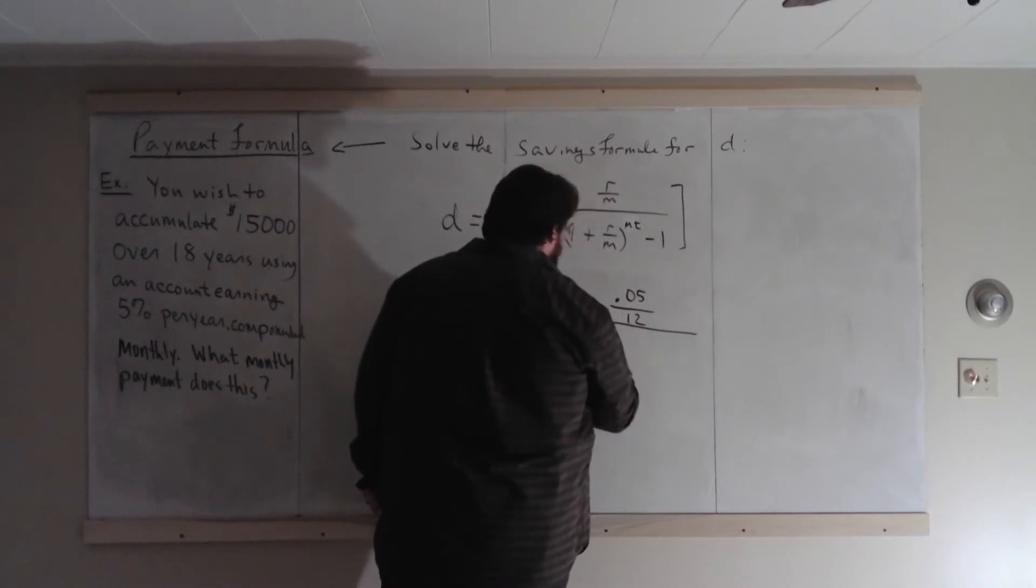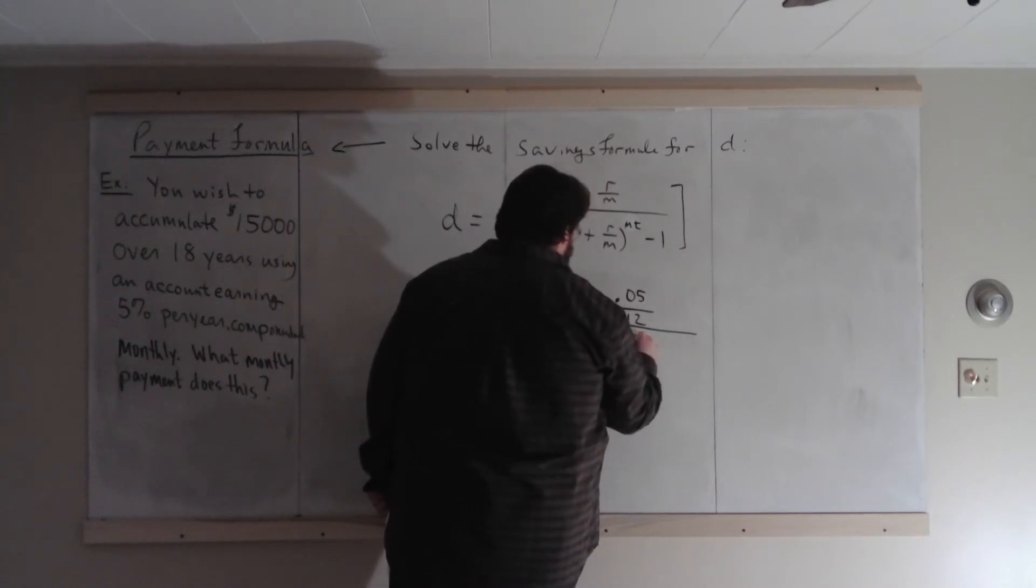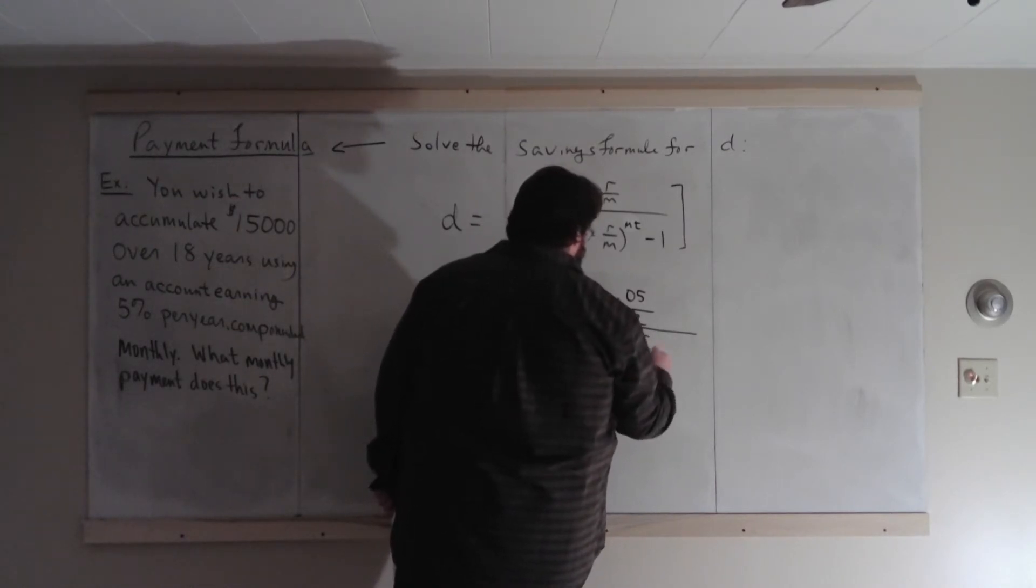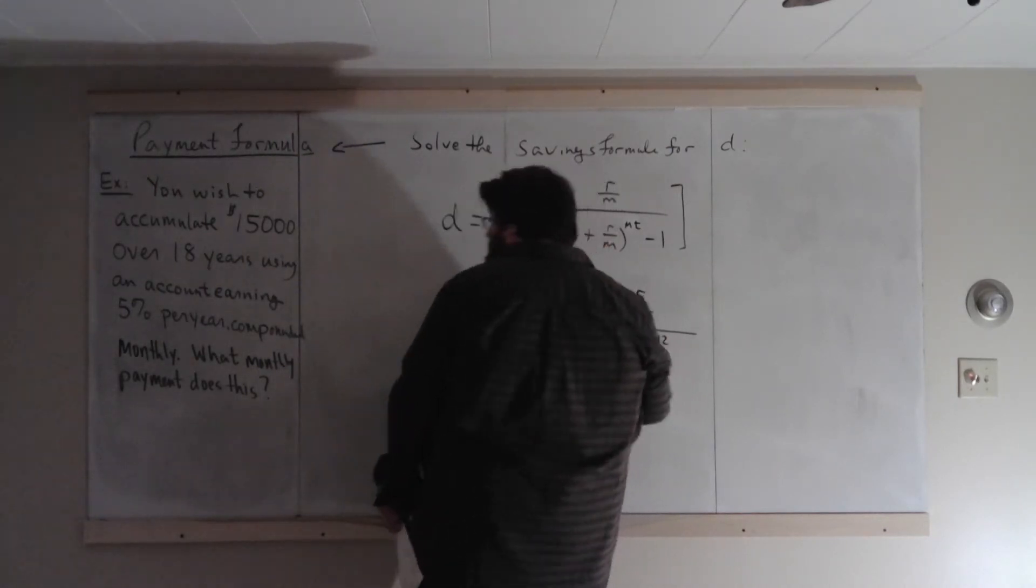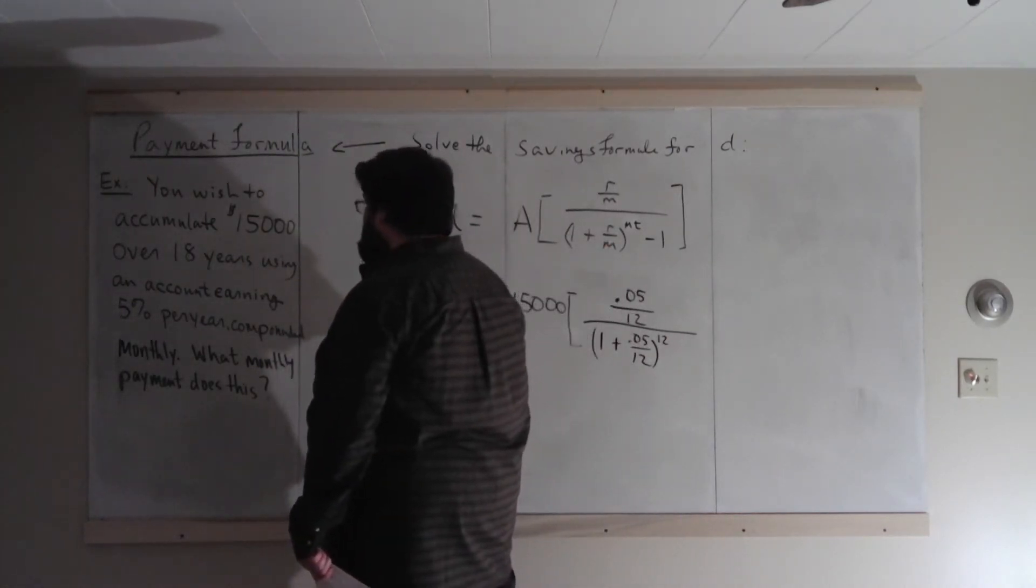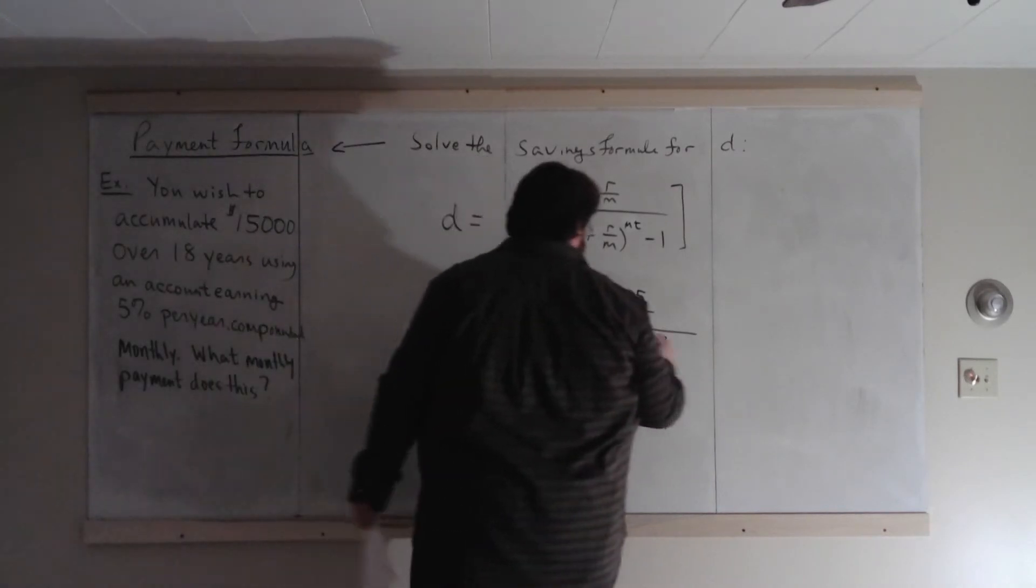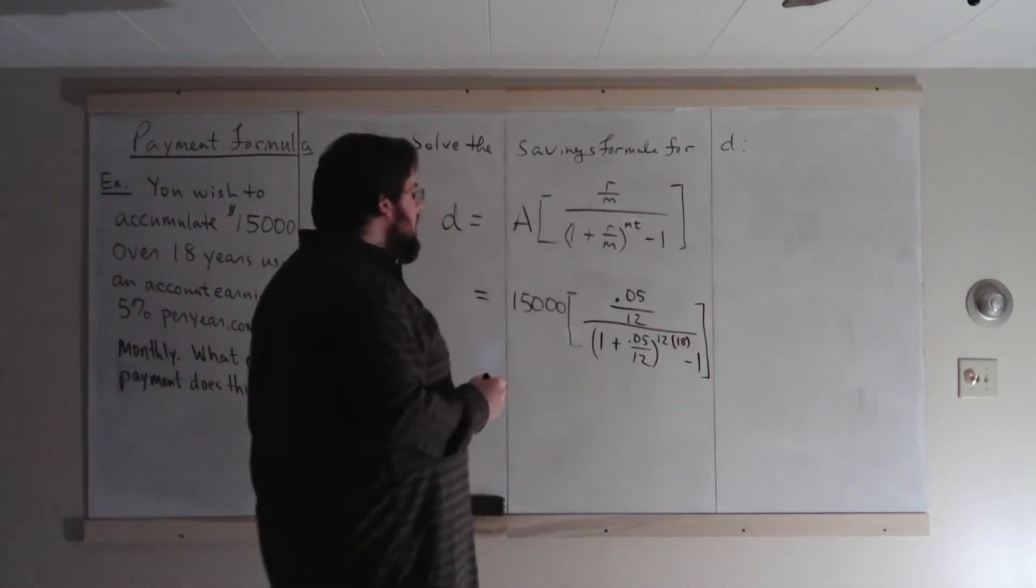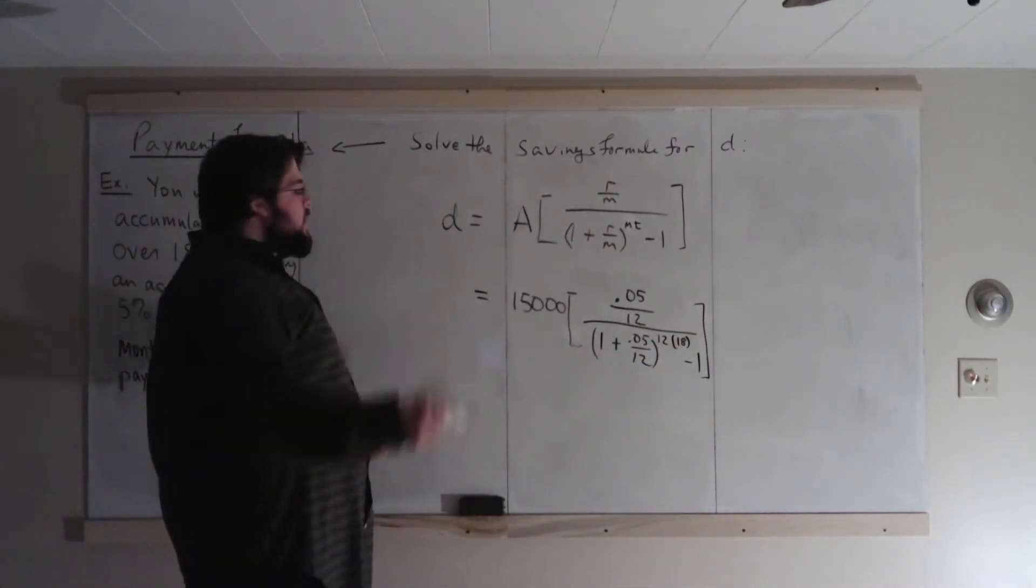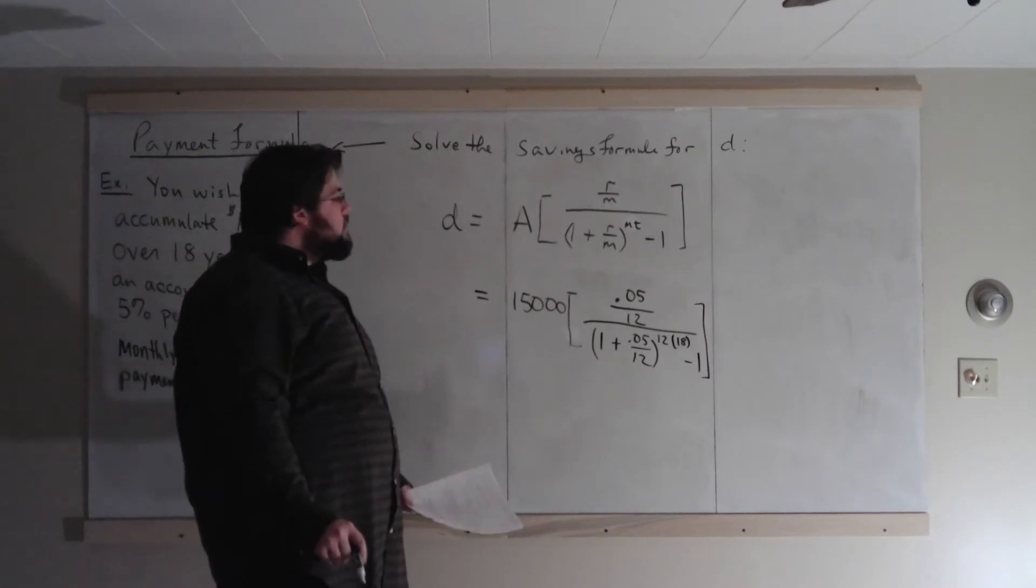I guess I should make this bracket a little bigger. I didn't make it much bigger. All over 1 plus 0.05 over 12 to the M, which is 12, to the T, which is what? 18 years. 12 times 18 minus 1.